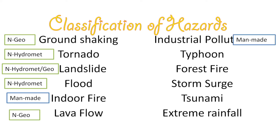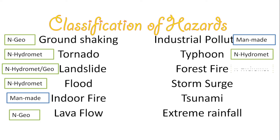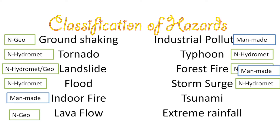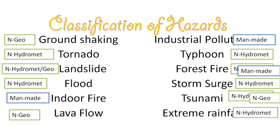Flood is hydro-meteorological. Indoor fire is man-made. Lava flow is geological. Industrial pollution is man-made. Typhoon is hydro-meteorological. Forest fire can be hydro-meteorological and can also be man-made. Storm surge is hydro-meteorological and can also be geological. Tsunami is also considered geological because after earthquakes — due to the movement of the earth — tsunamis can be caused. Extreme rainfall is a natural hydro-meteorological hazard.